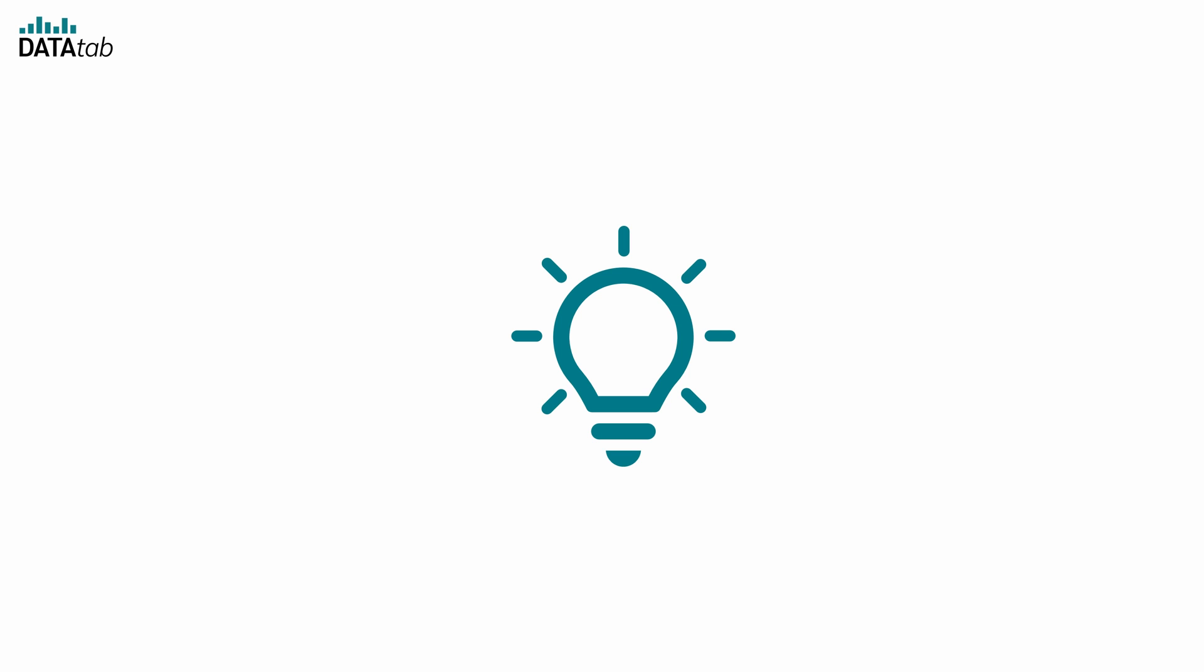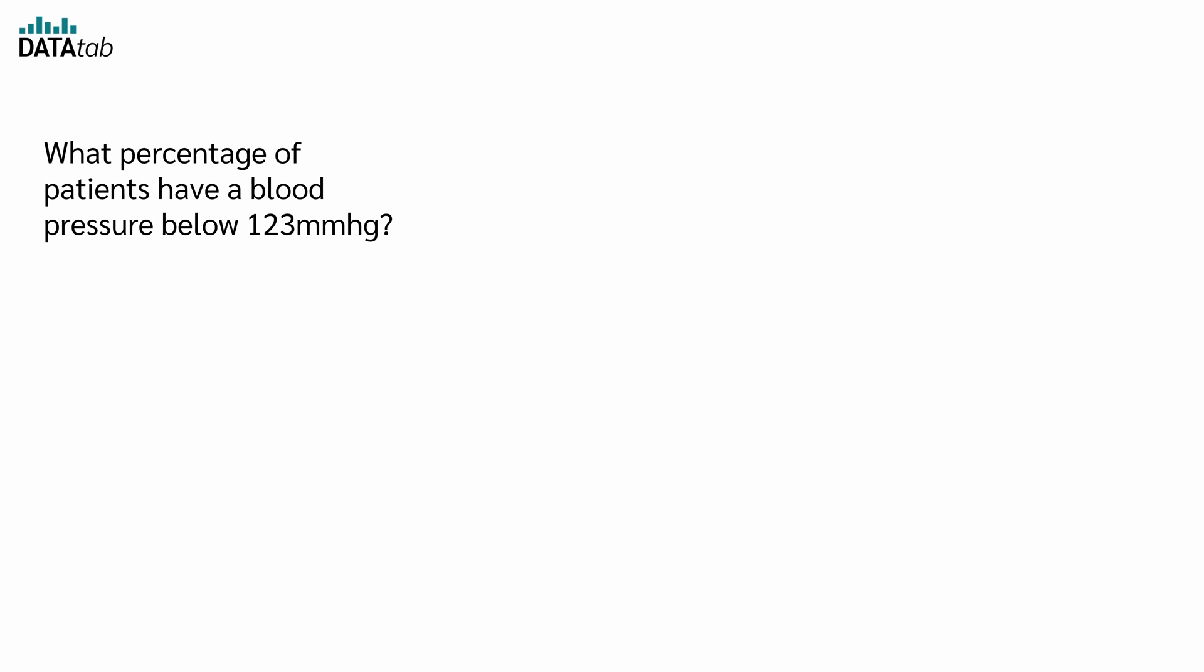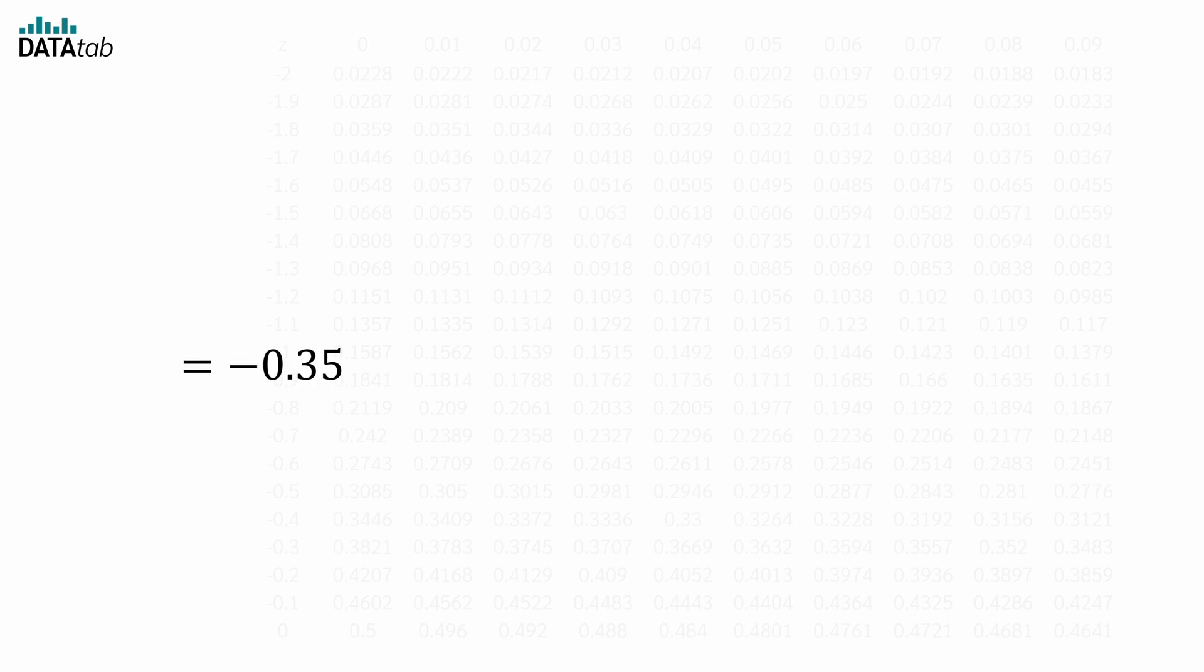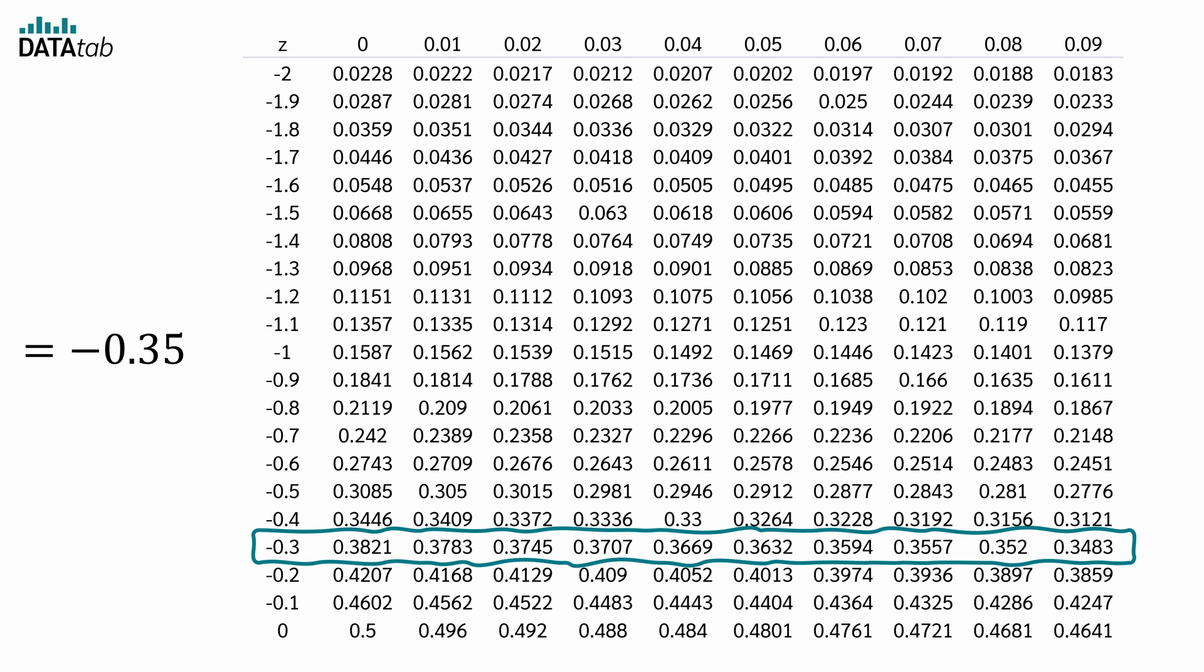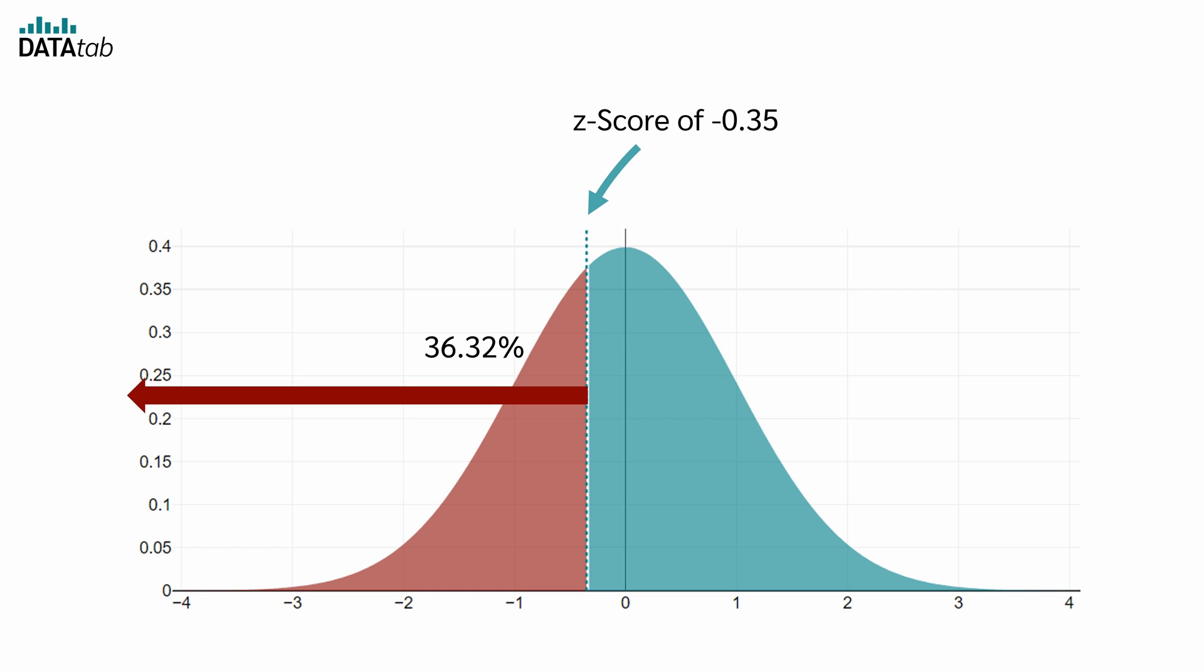Now let's look at all this for a certain blood pressure value. For example, if you want to know what percentage of patients have a blood pressure below 123, we can use a z-standardization to convert a blood pressure of 123 into a z-score. In this case, we get a z-score of minus 0.35. Using the z-distribution table, we find that a z-value of minus 0.35 corresponds to 0.3632. Thus, 36.32% of the values are smaller than a z-score of minus 0.35 and 63.68% are larger.